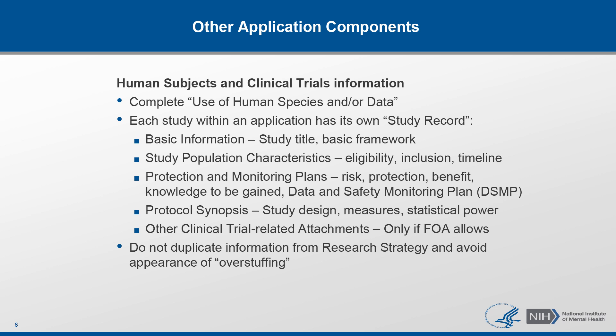In Section 4, protocol synopsis, if you're submitting a clinical trial, you have to provide a narrative description of the protocol, such as the primary purpose of the trial, the intervention, outcome measures, and statistical design and power. In Section 5, other clinical trial related attachments, you can attach documents that your FOA specifies are required or permitted. Please be sure not to duplicate information in the research strategy and the human subjects and clinical trials information form, as this might be interpreted as over-stuffing.